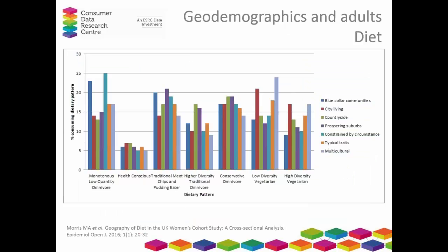To give some background from previous work using data on adults: this chart uses data from a cohort of 35,000 women in the UK, recruited 20 years ago and followed up for health outcomes including different types of cancers. This chart is a cross-section of the dietary information collected 20 years ago. The groups on the right-hand side — blue collar communities, city living, countryside, prospering suburbs, constrained by circumstance, typical traits, and multicultural — are 2001 Output Area Classification groups. The seven groups across the bottom are dietary patterns derived from cluster analysis of food frequency questionnaire data.